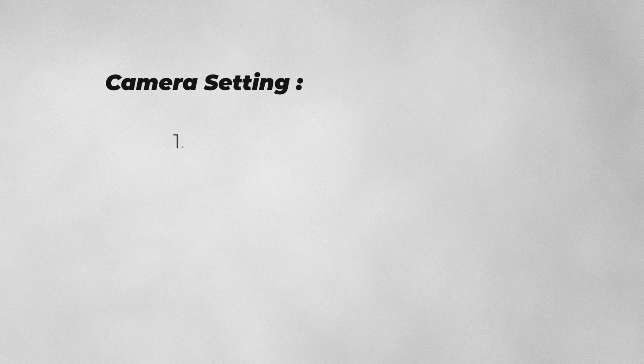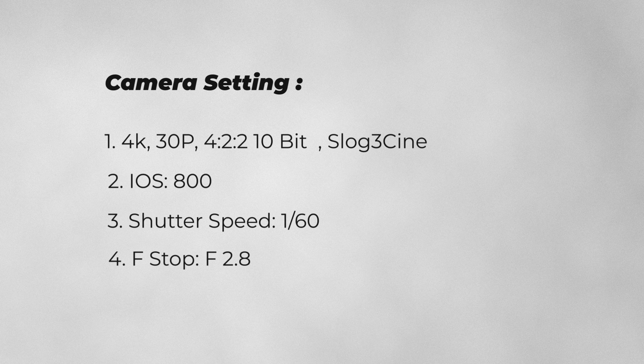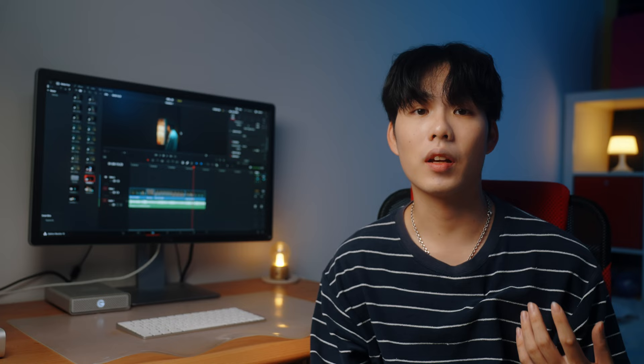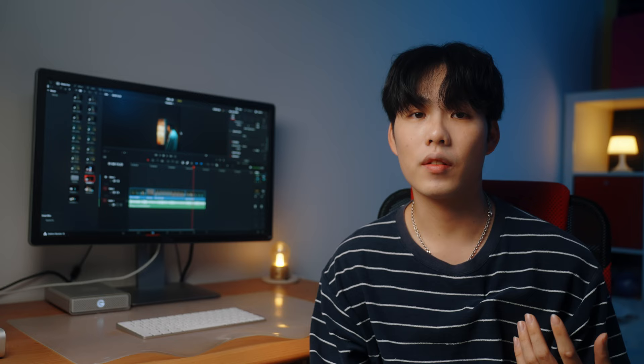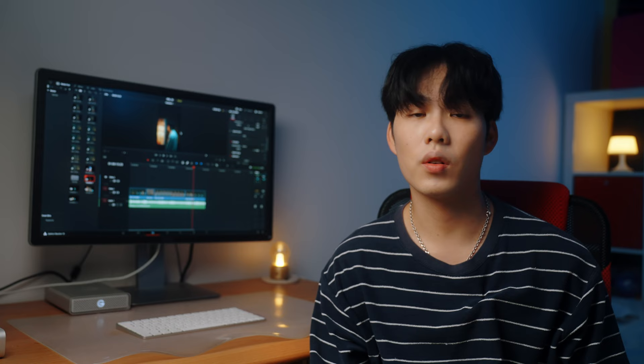For camera settings I shoot 4K 30p 4:2:2 10-bit with S-Log3 Cine. The reason we shoot 30 frames per second is because Instagram plays video at 30 frames per second on their app, so I match that with my camera. If you want to use a higher frame rate to capture slow motion, you can do that too — just remember when exporting you need to change your video frame rate to 30, which we'll talk about in detail later.